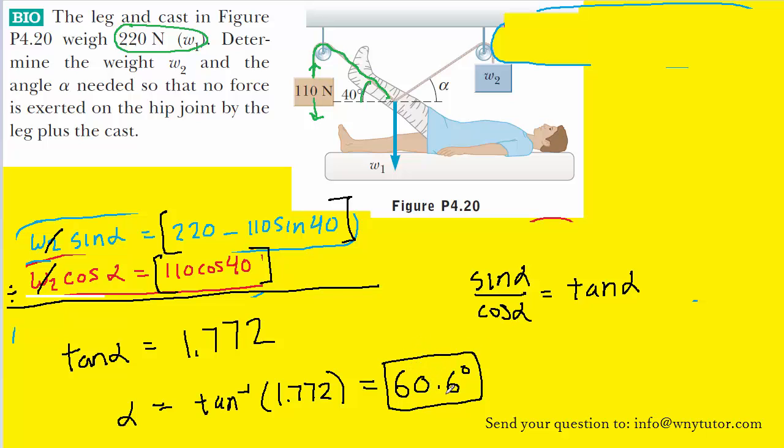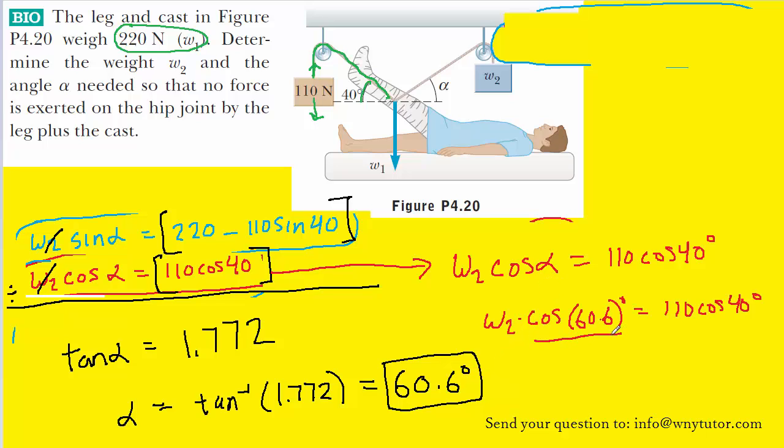And that's going to be relatively straightforward once we have alpha. Because we can actually come over and use that equation that we had written in red and solve quite easily for w2. Let's go ahead and rewrite that equation. We'll substitute in our value for alpha, and then we'll divide both sides by the cosine of our alpha, which was 60.6 degrees.